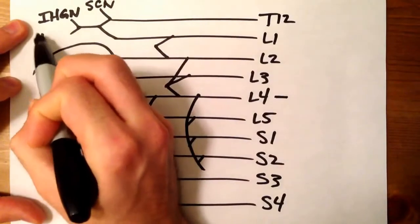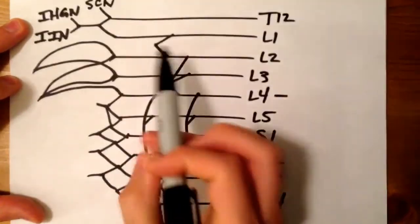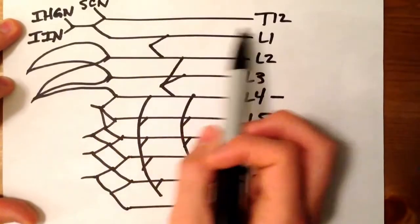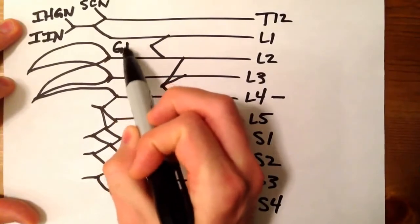And then this one's going to be your ilioinguinal nerve. So those are both T12 and L1. L1, L2 is going to be your genitofemoral nerve.